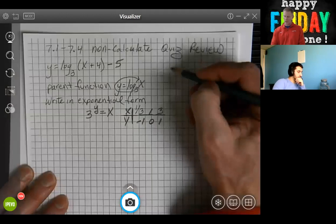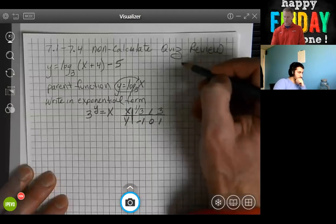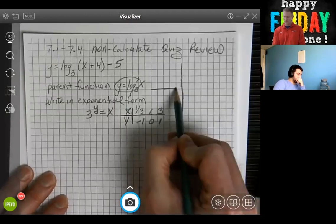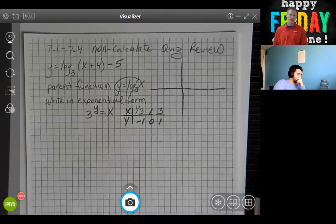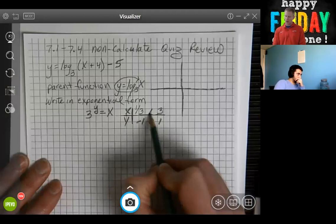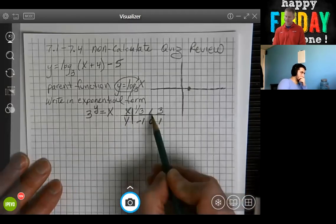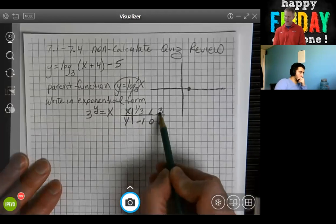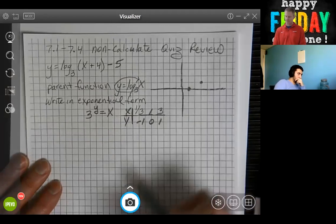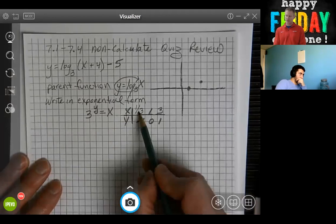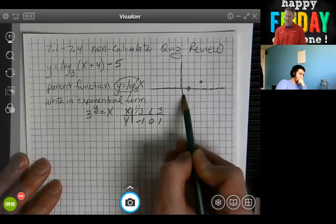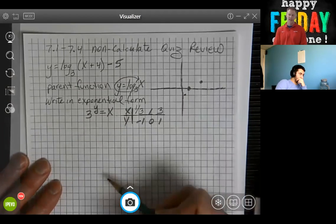So now we're going to come over. There we have our graph. When x is 1, y is 0. When x is 3, y is 1. And when x is 1 third, we're down here at negative 1.